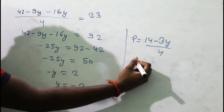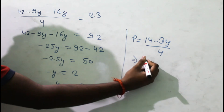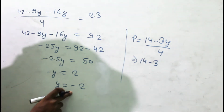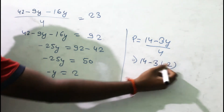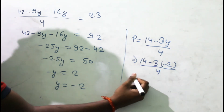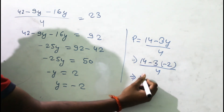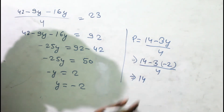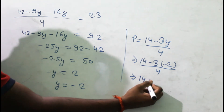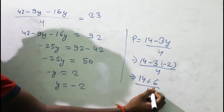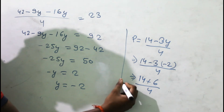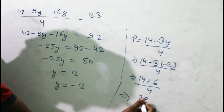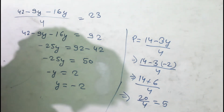Substituting y = -2: p = (14 - 3×(-2)) / 4 = (14 + 6) / 4 = 20/4 = 5.